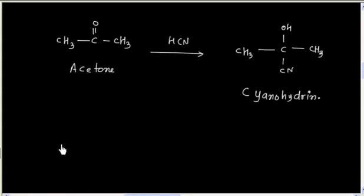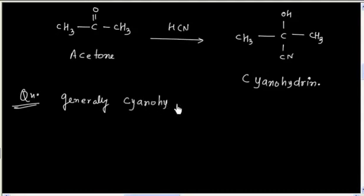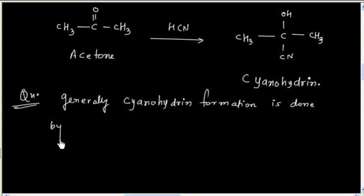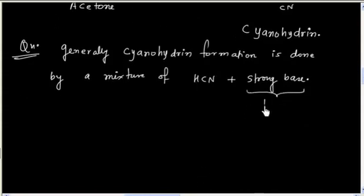A question that is generally asked: for cyanohydrin formation, a mixture of HCN and a base is used — for example NaOH or any strong base. This strong base is taken in a limited amount. So why is the reaction done in the presence of HCN and a strong base?